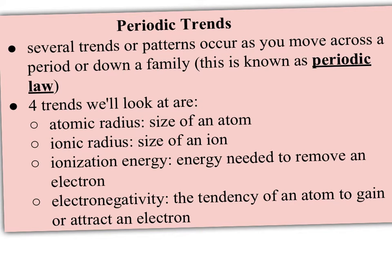Welcome. This video is going to start to look at four important periodic trends to us as we study chemical behavior. There are several trends or patterns that occur as you move across a period or down a family. And remember this is known as periodic law, this repeating pattern that occurs both within the periods and within the families.